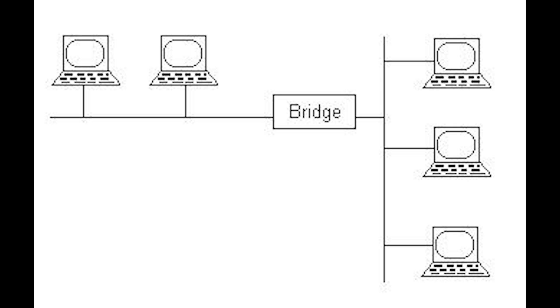Bridges reduce collisions by creating separate collision domains on each side of the bridge. A bridge reads a frame's destination address and decides to either forward or filter the frame. If the bridge determines that the destination host is on another segment of the network, it forwards the frame to that segment.